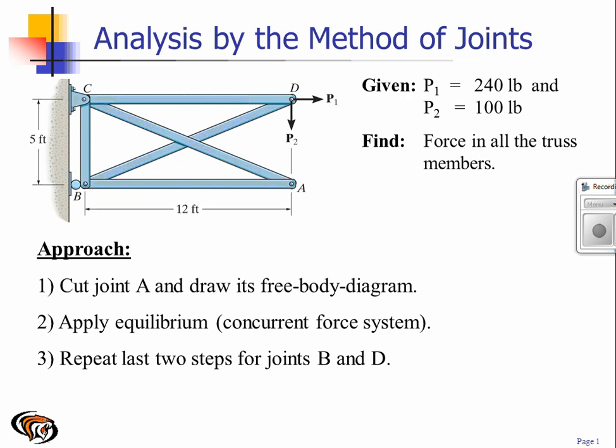After we conduct the equilibrium analysis for joint A, we will then proceed to do free body diagrams of joint B and D and then also apply equilibrium to the joints and so we'll have all the forces in all the members.